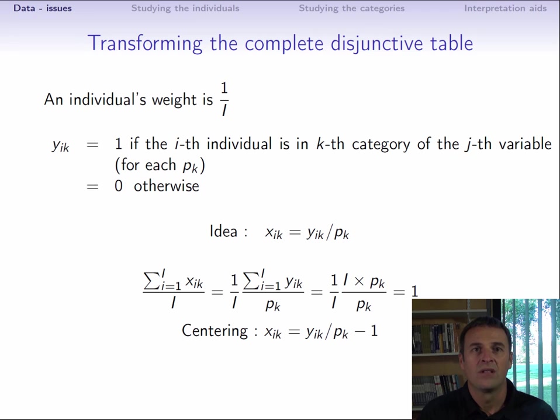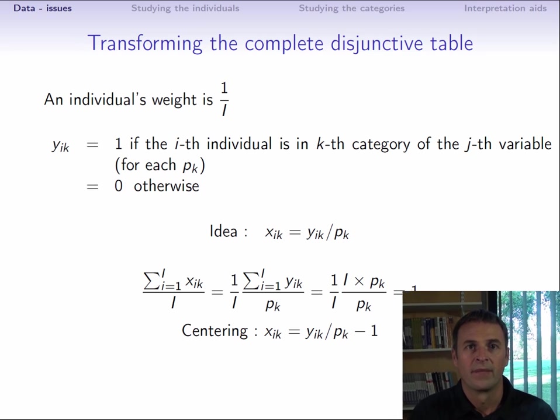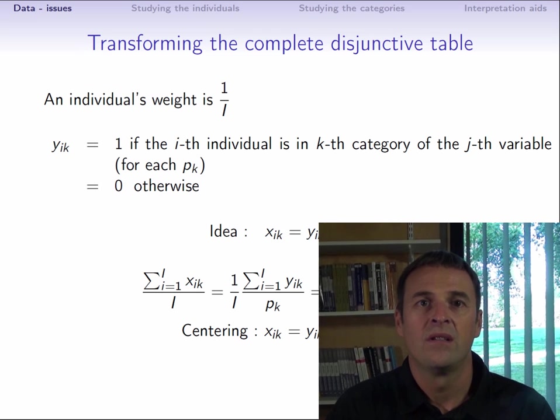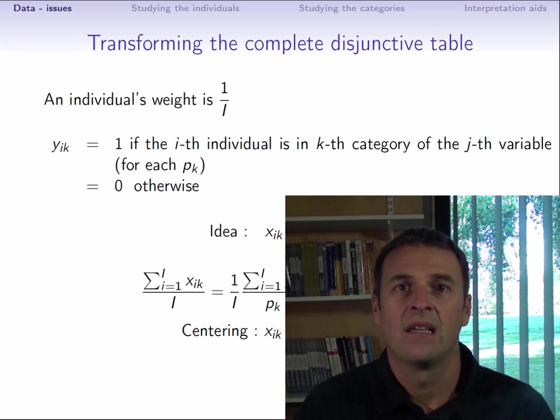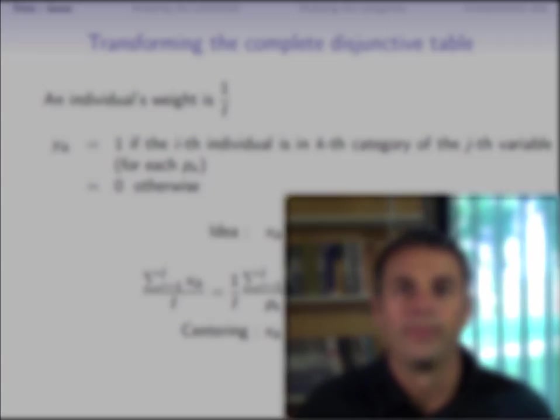So, we have now seen what the data looks like in MCA and the kinds of questions we want to answer. In the next videos, we'll see how to construct and interpret point clouds of individuals and categories, starting from the table of the xi k's.